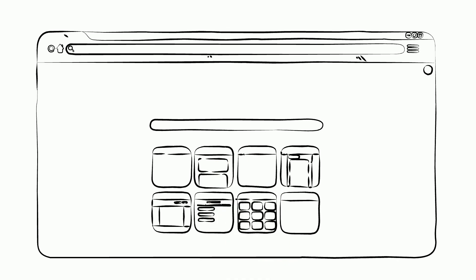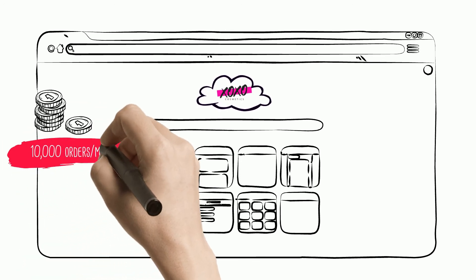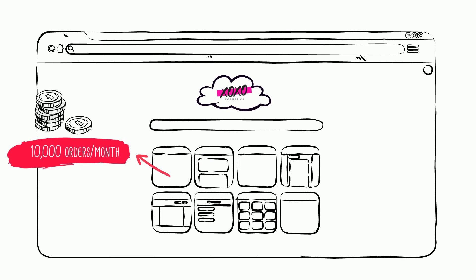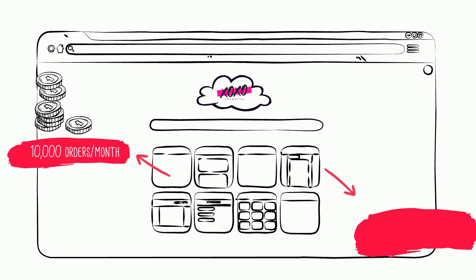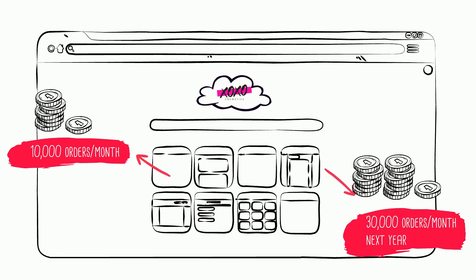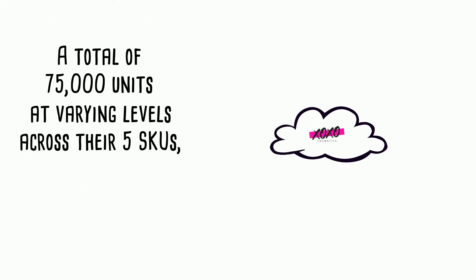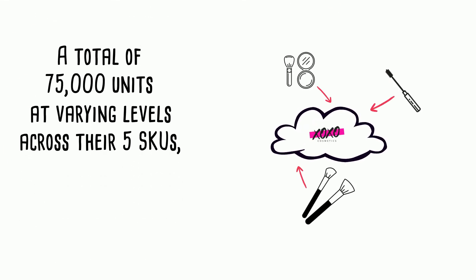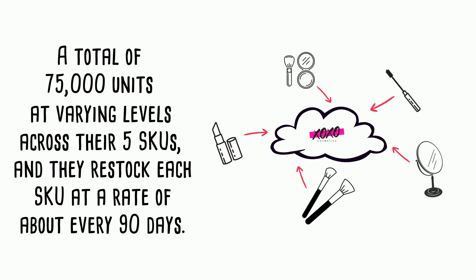Here's an example of demand forecasting. An up-and-coming direct-to-consumer cosmetics brand is growing quickly. Currently, they're selling 10,000 orders per month. Based on their past sales data, upcoming ad campaigns, and general market conditions in the industry, they plan to be above 30,000 orders per month at this time next year. Right now, they're stocking a total of 75,000 units at varying levels across their five SKUs. Their order volume fluctuates quite a bit based on their replenishment cycle, and they restock each SKU at a rate of about every 90 days.